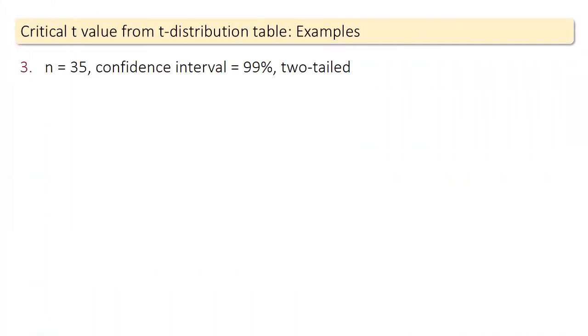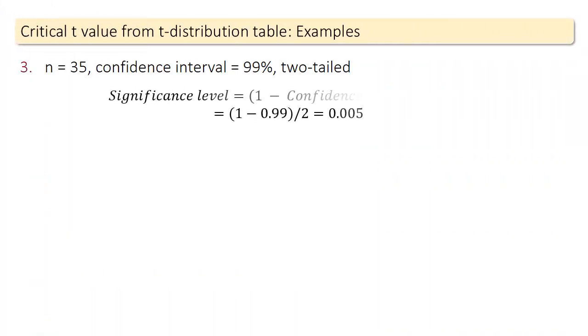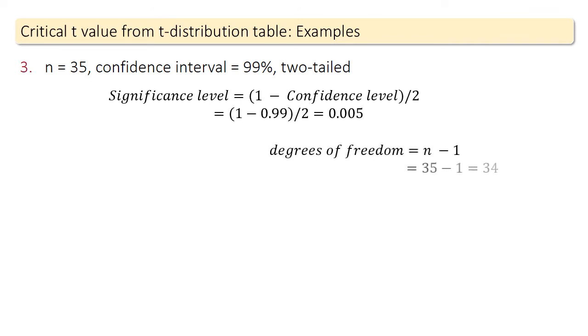In this example, the distribution is two-tailed, the significance level is 0.01, and the degrees of freedom is 34.